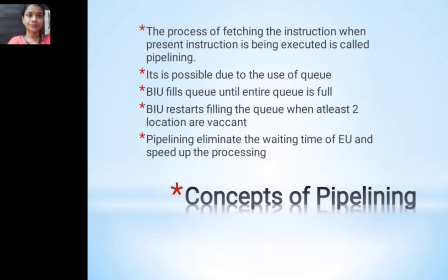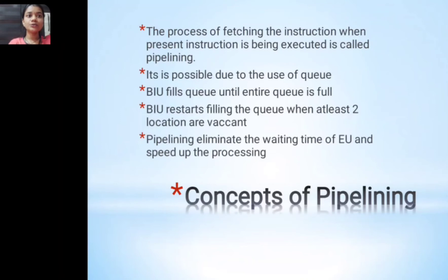The fifth function of the BIU is the instruction queue. The 8086 has a pipeline processor. Pipelining means fetching an instruction, then executing it — one by one — which is made possible by the use of a queue. Instructions are lined up in the queue so they can be fetched and executed sequentially. The BIU fills the queue until the entire queue is full.